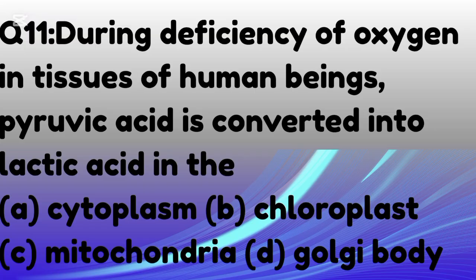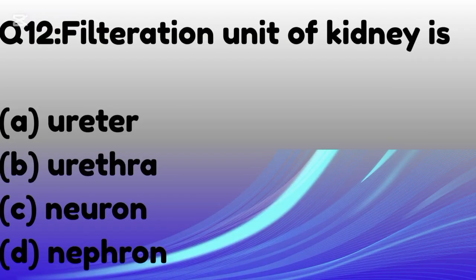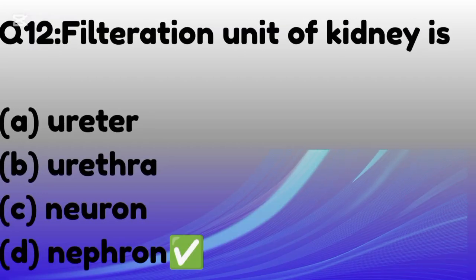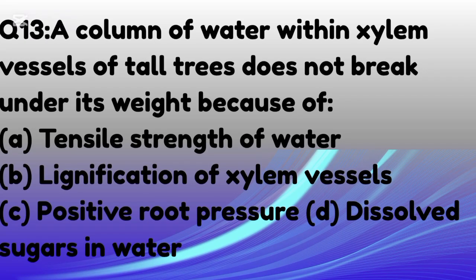During deficiency of oxygen in tissues of human beings, pyruvic acid is converted into lactic acid in the — the correct option is A: cytoplasm. The filtration unit of the kidney is the nephron — the correct option is B: nephron.